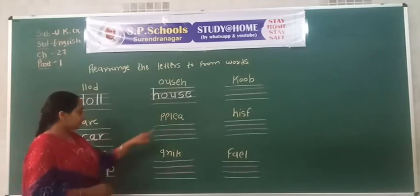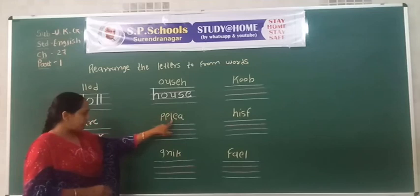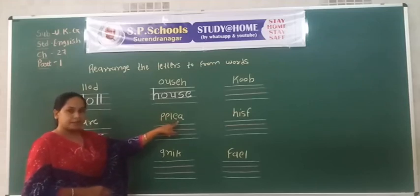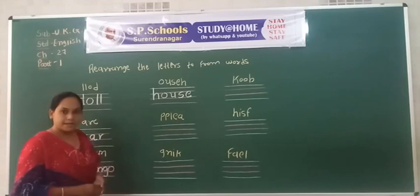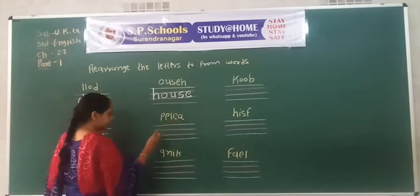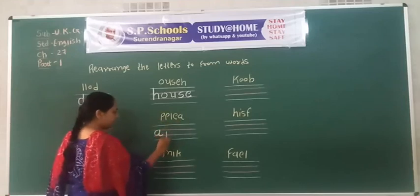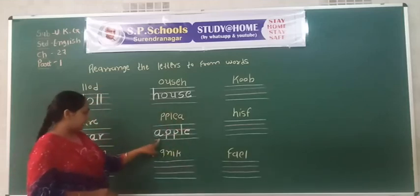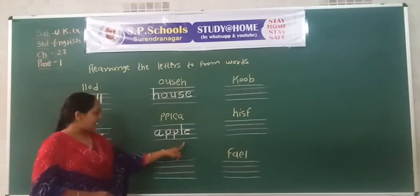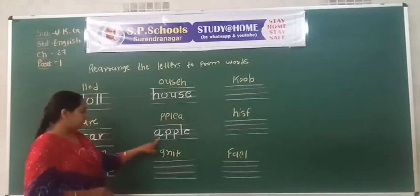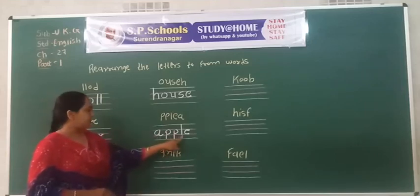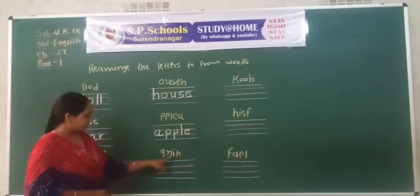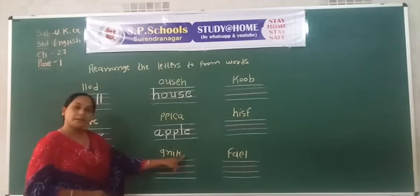Next word: Double P, L, E, A. The correct word is Apple. A, double P, L, E.